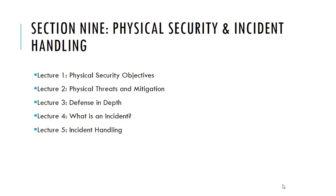Section 9 introduces physical security and incident handling. Lecture 1 is about the objectives of physical security and how human lives are the most important subject. Lecture 2 shows physical threats and their mitigation and how physical threats can be overcome. Lecture 3 introduces the defense-in-depth concept and how to slow the pace of any attacker trying to perform network intrusion. Lecture 4 shows what incident handling is, what an incident is, and how an event can be considered an event of interest and then transformed into an incident. Lecture 5 demonstrates the steps of incident handling in a professional way on a scientific basis.